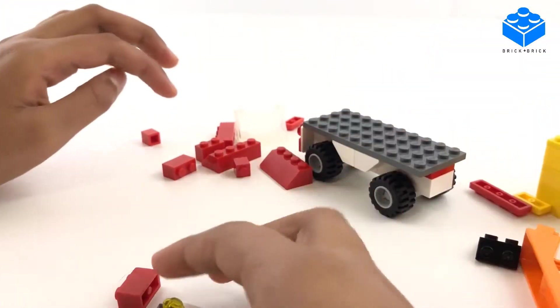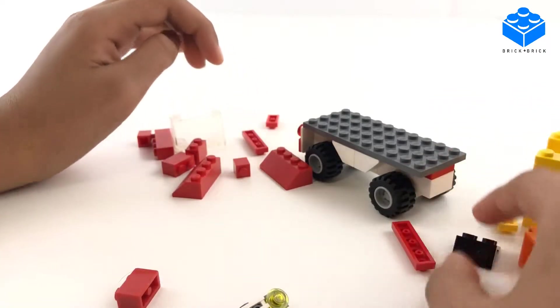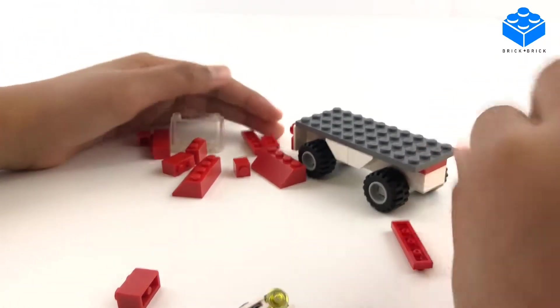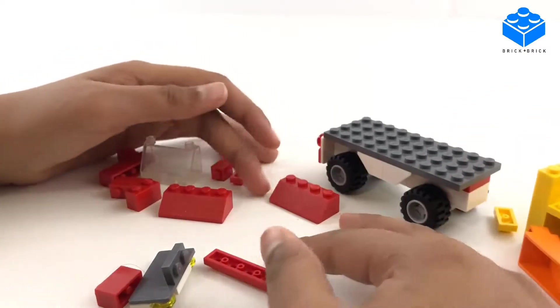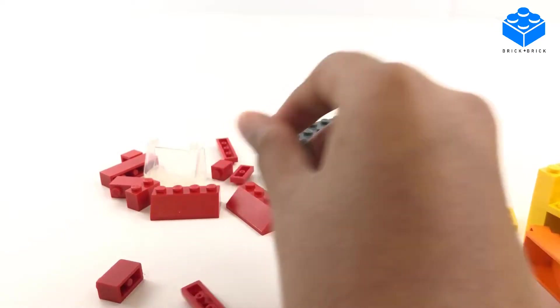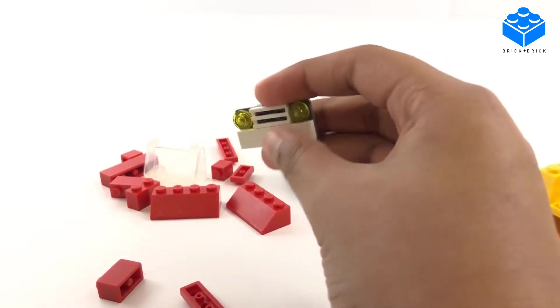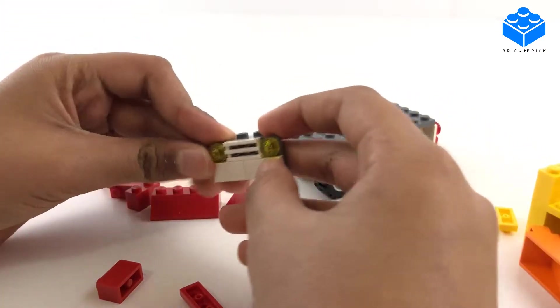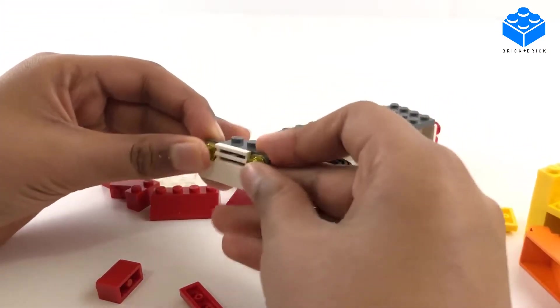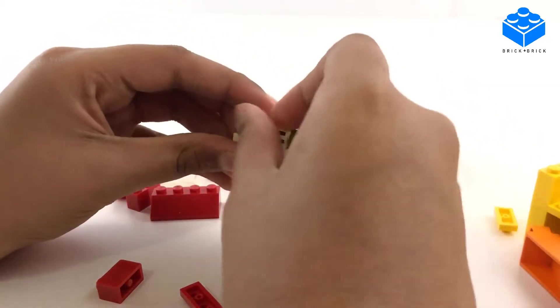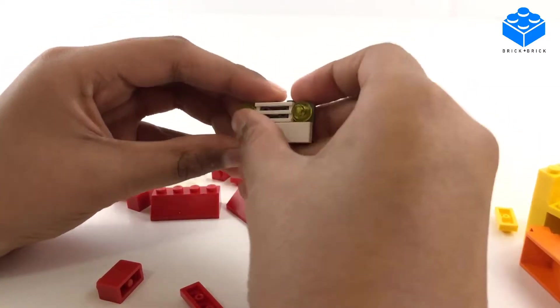All right, so first I'm going to show you how to build the cab of this little truck slash delivery van. I'm going to show you all the pieces you'll need first. You're going to need one of these two by four brackets with two one by one stud pieces, one one by two grill, and two one by two flat pieces on the front.